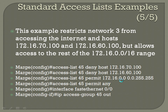Access-list 45 permit 172.16.0.0 with the wildcard mask. The permit any needs to be left out because we want an implicit deny at the bottom to block every other IP from the Internet. Disregard that line. Then it's applied on FastEthernet 0/0 in the outbound direction: IP access-group 45 out.